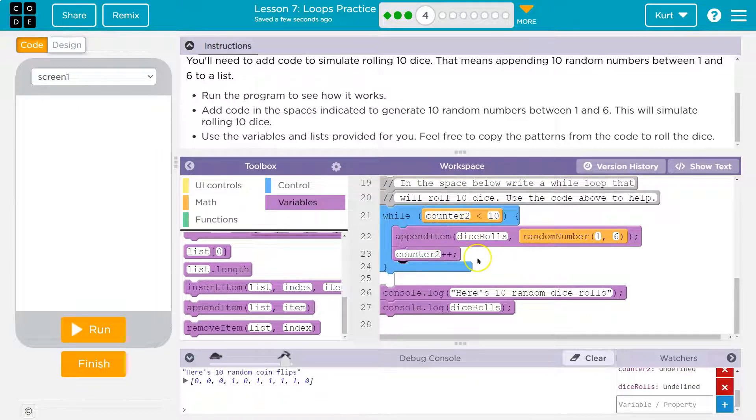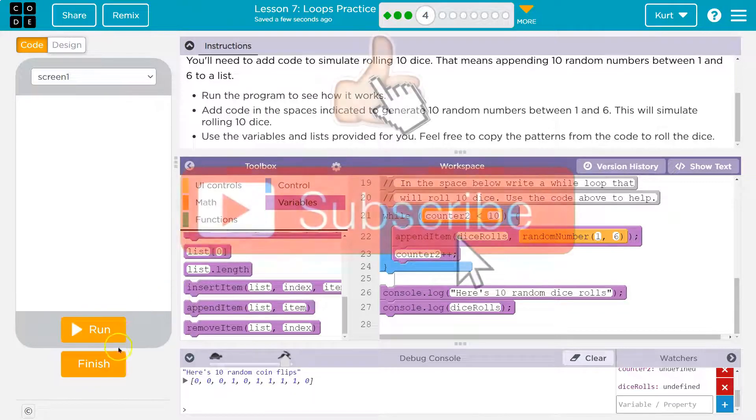All right. And this should print out now or append to our dice rolls 10 different rolls, 10 different random numbers, because each time we're adding one to counter two, we hit the bottom, we go back up. Once counter two is equal to 10, it says, oh, that's it. And it drops below and runs the code. So between zero and 10, it will append to dice rolls.